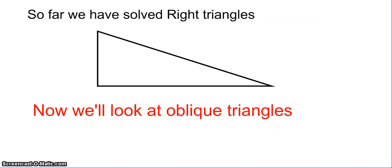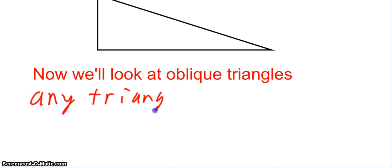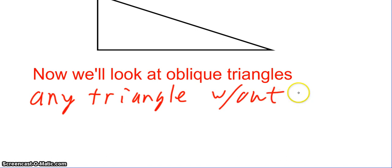So far we've solved right triangles. Right triangles are pretty easy — all of the trig functions relate to right triangles. Now we're going to look at oblique triangles. An oblique triangle is just any triangle without a right angle.